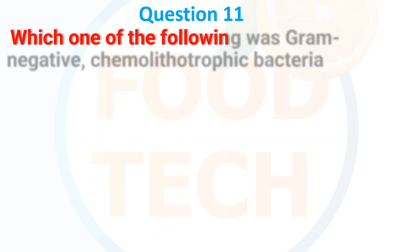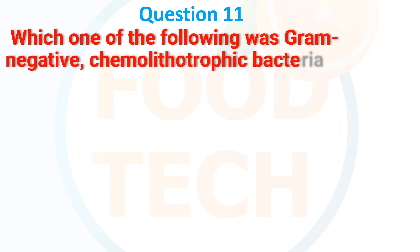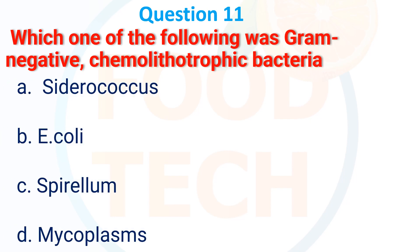Which one of the following is a gram-negative chemolithotrophic bacteria? A. Siderococcus, B. E. coli, C. Spirillum, D. Mycoplasma. The answer is B: E. coli.